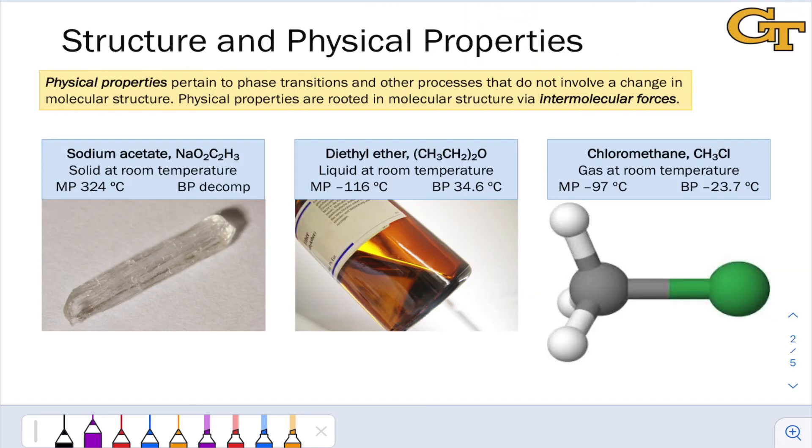Let's start by reminding ourselves what we mean by physical properties. A physical property is a property of a substance that pertains to a process that doesn't involve bonds being made or broken or a change in molecular structure. There's no change in molecular structure during a process associated with a physical property.